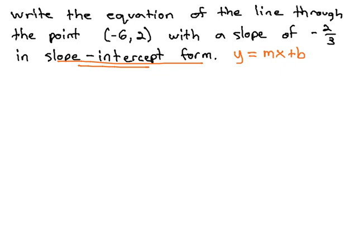So we're going to have to approach this problem a different way. Instead, what we will do is, since we have a point (-6, 2) and a slope of -2/3, we will use the point-slope formula to get us started instead.